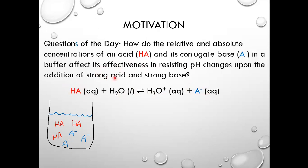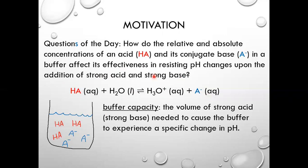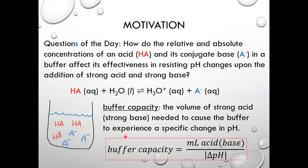We want to quantify and judge which of these various buffers, composed of various ratios of HA and A- — various ratios of acetic acid and acetate ion — are better or worse at resisting pH changes upon the addition of a strong acid or strong base. To do that, we're going to quantify something called buffer capacity, which is a way of measuring how effective various buffers are. Buffer capacity is simply the volume of a strong acid or strong base needed to cause the buffer to experience a specific change in pH.